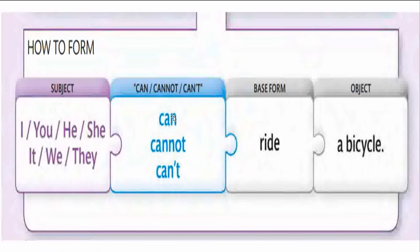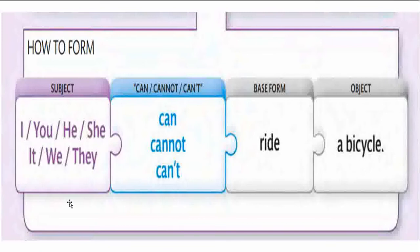Let us construct the sentence with all pronouns: 'I can ride a bicycle. You can ride a bicycle. He can ride a bicycle. She can ride a bicycle. It can ride a bicycle. We can ride a bicycle. They can ride a bicycle.' It can also be done with the negative: 'I cannot ride a bicycle' or 'You can't ride a bicycle. We can't ride a bicycle.' You may pause the video and try constructing all three forms with all the pronouns.